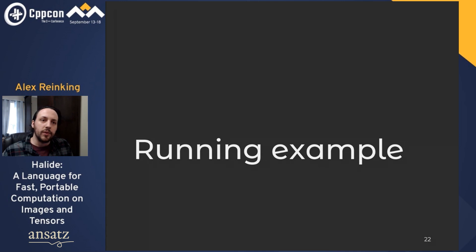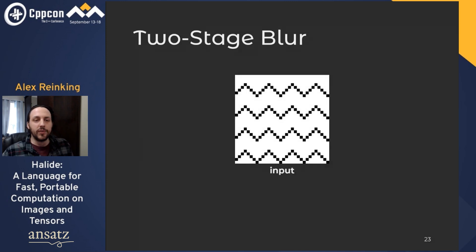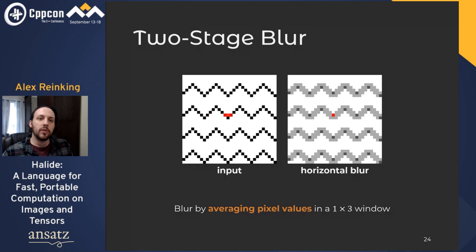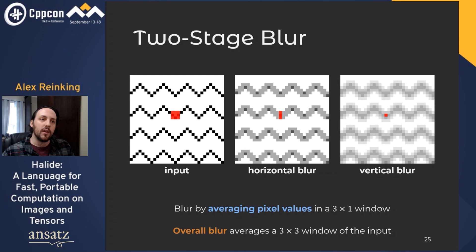For the rest of the talk, we'll use a running example that typifies the kind of program Halide helps you optimize: the two-stage blur. As the name suggests, it takes an input image and makes it blurry. First it blurs the image horizontally by averaging a pixel with its neighbors to the left and right. Then it does the same on the horizontally blurred image, but vertically — averaging neighbors above and below. This is effectively the same as blurring the full 3×3 box around a pixel, but splitting into two stages does less arithmetic overall.